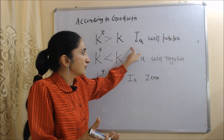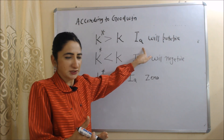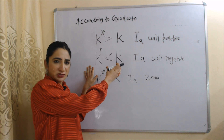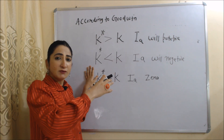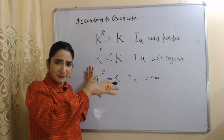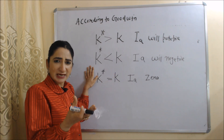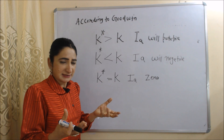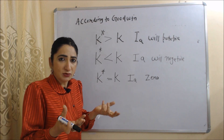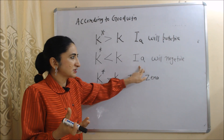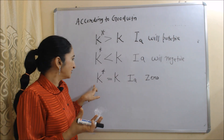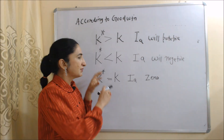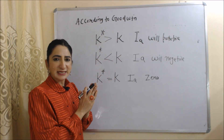When K* > K, we will definitely increase our investment, so net investment will be positive. On the other hand, if desired capital stock is less than actual capital stock, that means we already have more capital than we need, so we will reduce investment and net investment will go negative. When K* equals K, net investment will be zero.